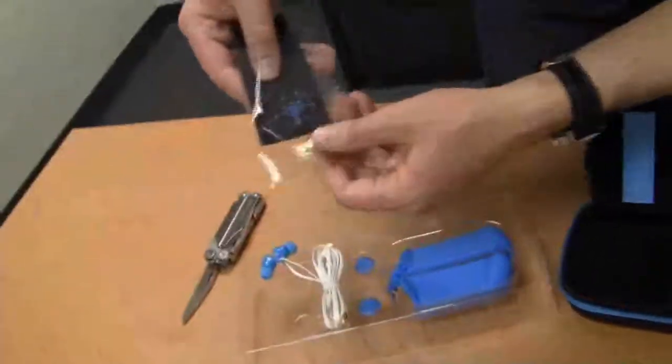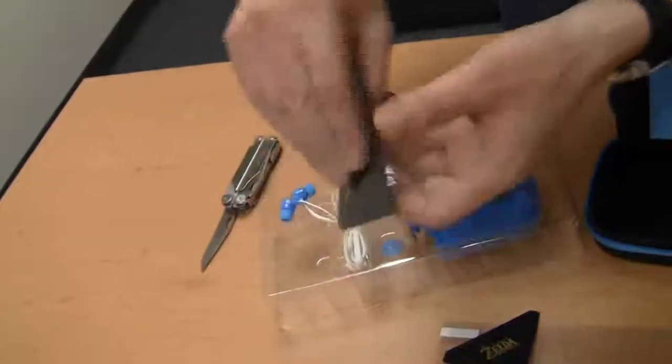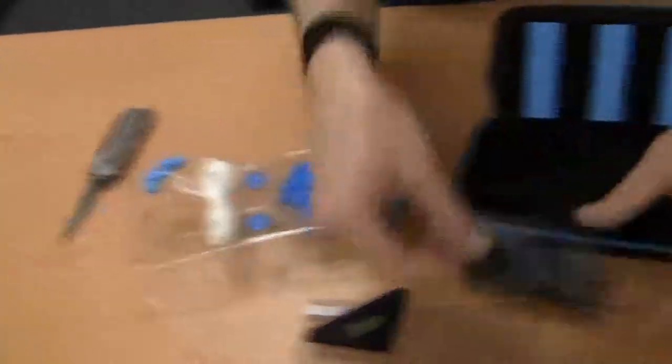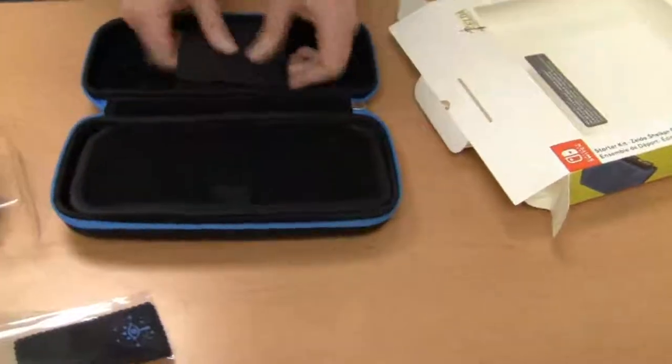And of course microfiber cloth. Basically you gotta give it a rub down beforehand. Sheikah Slate icon. Yeah, just folded, nothing too spectacular there.